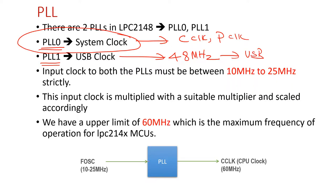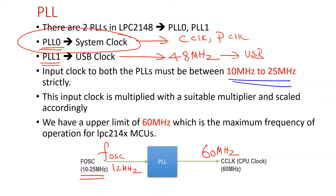The scheme diagram for PLL is shown here. The PLL takes input from the crystal oscillator. F-oscillator is the frequency of oscillation coming out from the crystal oscillator. PLL generates the CPU clock, or C-clock, which is typically expected to operate at 60 MHz. So the job of the PLL is to convert the 12 MHz input from the oscillator to 60 MHz. The oscillator output can range anywhere between 10 MHz to 25 MHz — any input outside this range the PLL cannot accommodate.